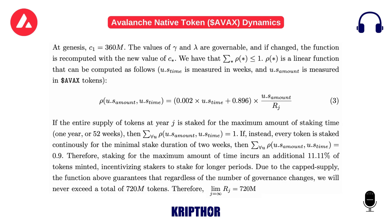If the entire supply of tokens at year J is staked for the maximum amount of staking time — 1 year, or 52 weeks — then the maximum reward rate applies. If instead every token is staked continuously for the minimal stake duration of 2 weeks, then PHI(U, U.SAMOUNT, U.STIME) equals 0.9. Therefore, staking for the maximum amount of time incurs an additional 11.11% of tokens minted, incentivizing stakers to stake for longer periods.